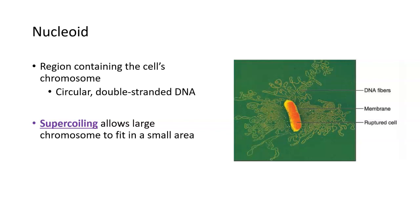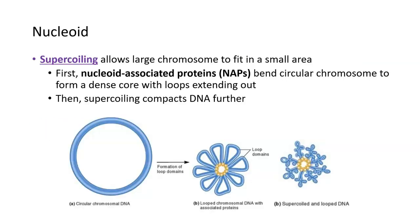There are some things that bacteria do to decrease the size of their large circular chromosome and allow it to fit into that smaller nucleoid region. This process of shrinking their chromosome down is done via supercoiling. What supercoiling is, is basically taking a big circular piece of DNA and then looping it to form almost this flower structure. Each one of these individual flower petals is able to twist and further coil in on itself.